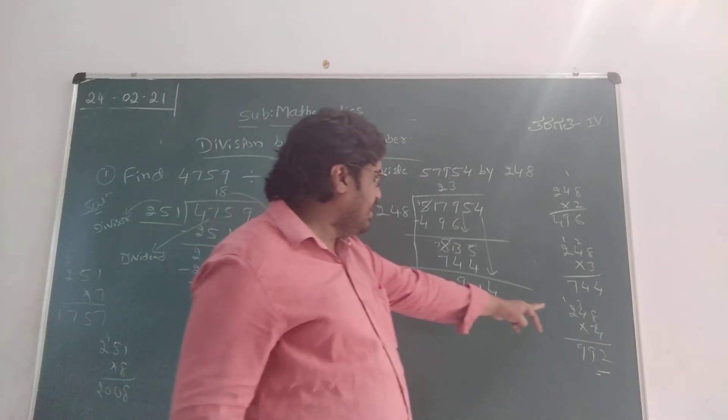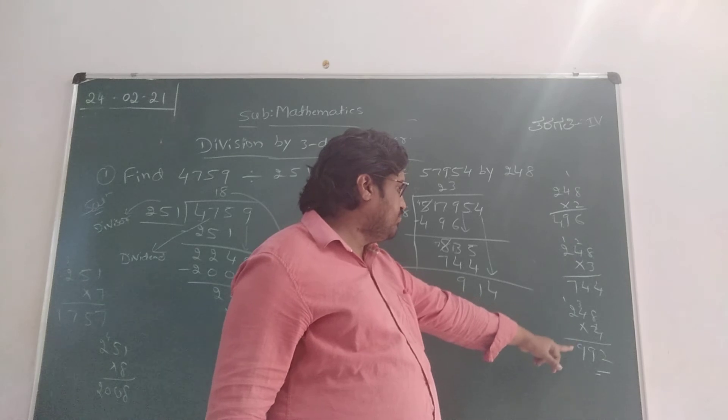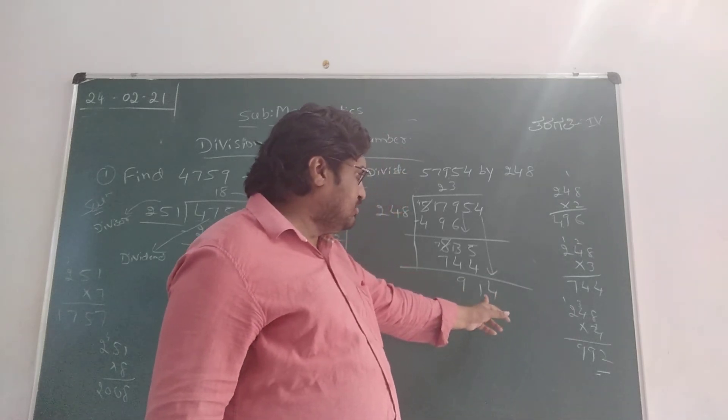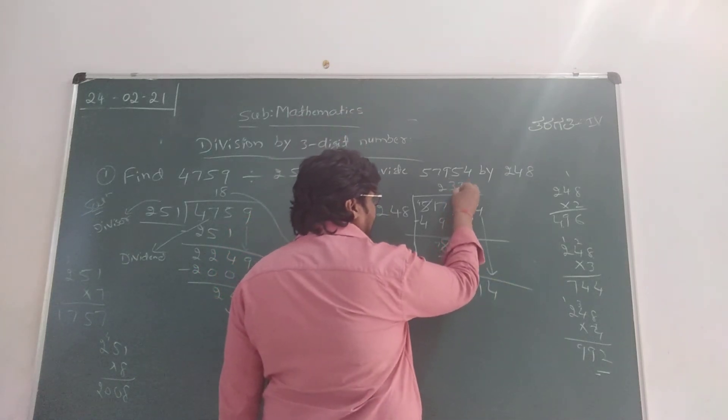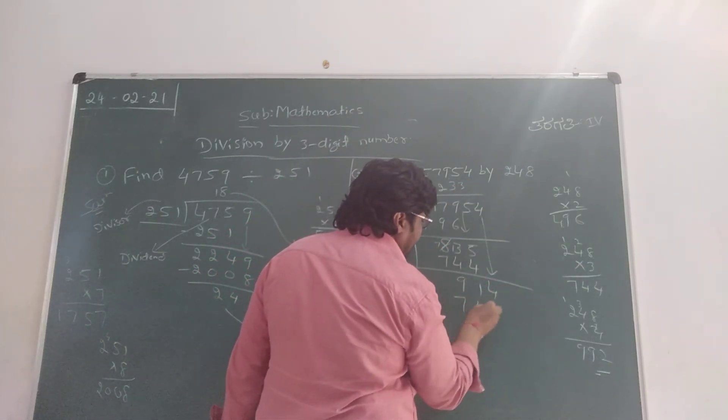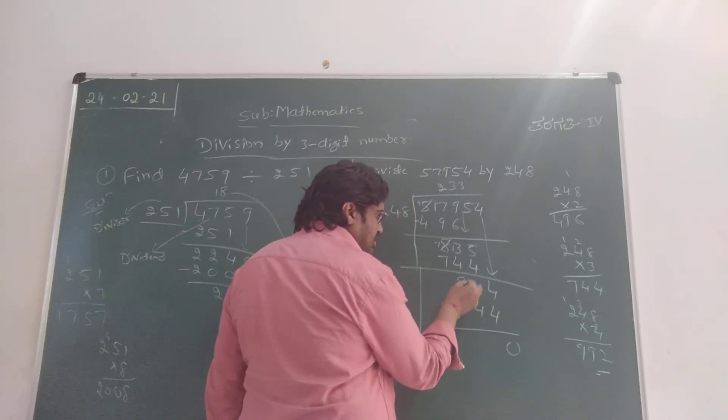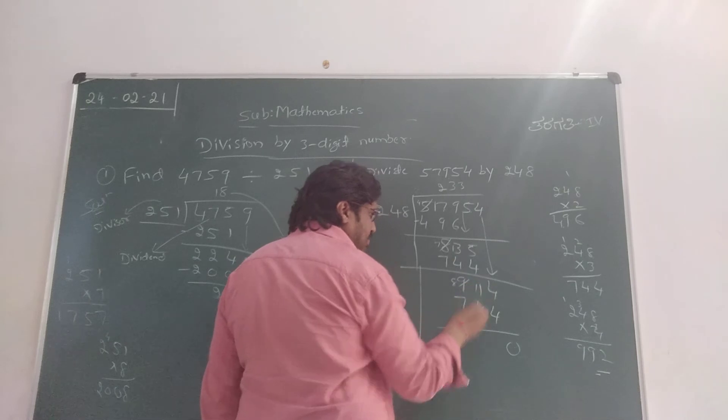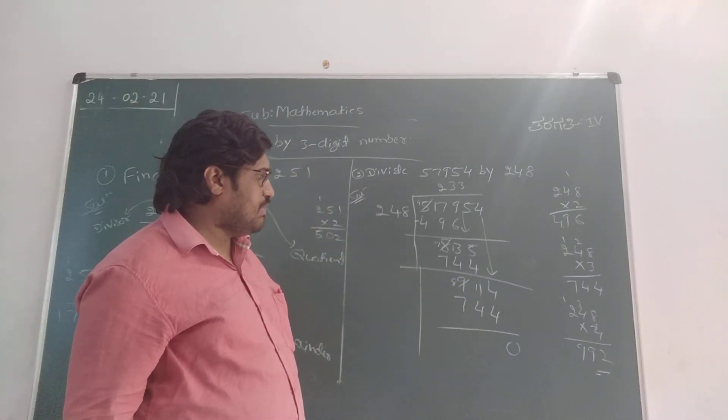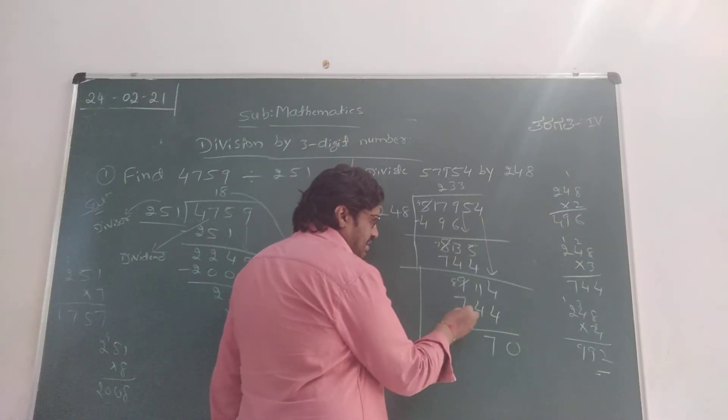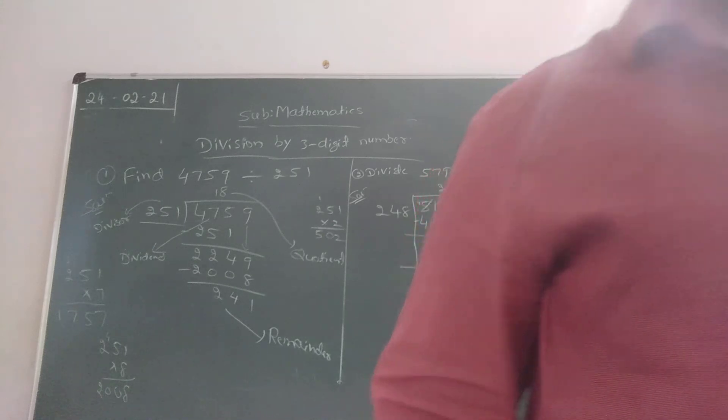914 children. See here, I am not going to take 248 times 4, because 248 times 4 is 992, which is more. So I am going to take 248 times 3 again, which is 744. Subtract: 4 minus 4 is 0, 11 minus 4 is 7, 8 minus 7 is 1. So 170 is our remainder.